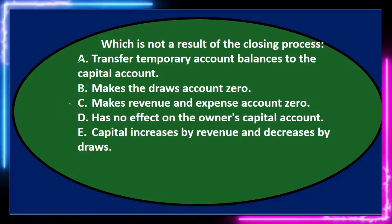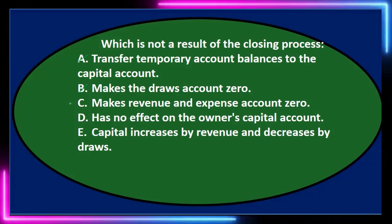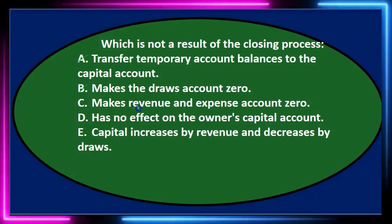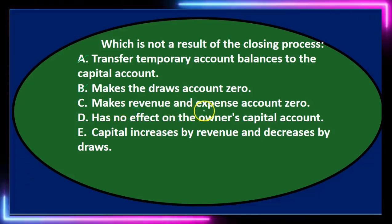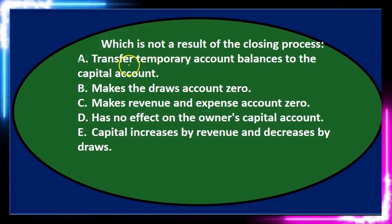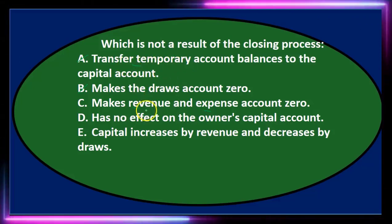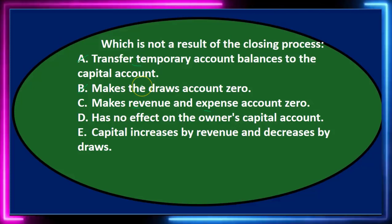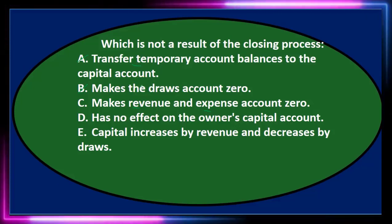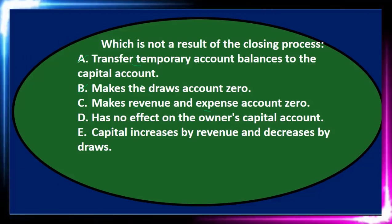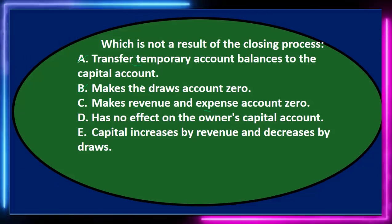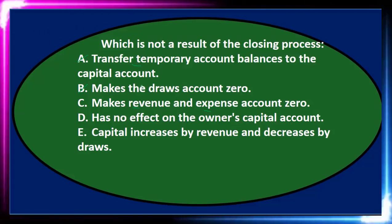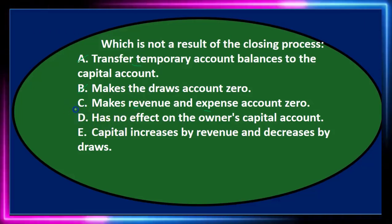C says makes revenue and expense accounts zero. Revenue and expense accounts are temporary accounts. They are the main temporary accounts, the other one being draws for a sole proprietor and dividends for a corporation. So it's not going to be C — that's what happens in the closing process.